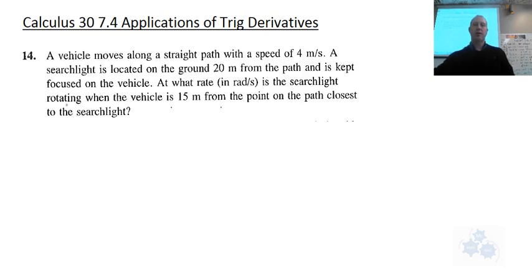Okay, so this is very similar to the searchlight question from before, offshore. So a vehicle is moving along a straight path, speed of 4 meters per second. A searchlight is on the ground 20 meters from the path. So let's say this is the path. This distance is 20 meters. And the vehicle is driving, so here's the little vehicle. The vehicle is driving on the path and the spotlight is following it.